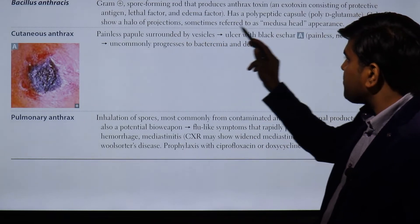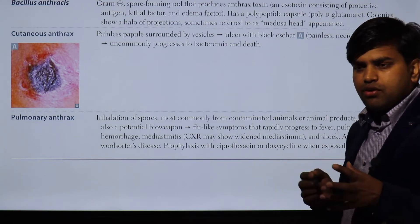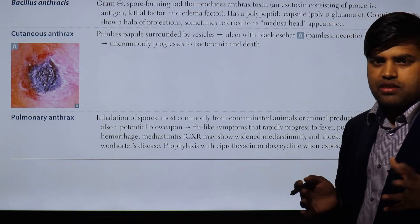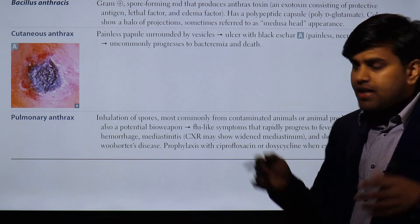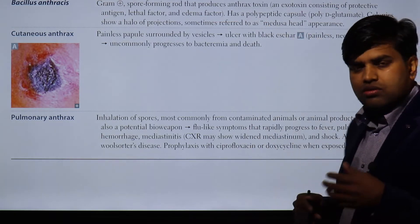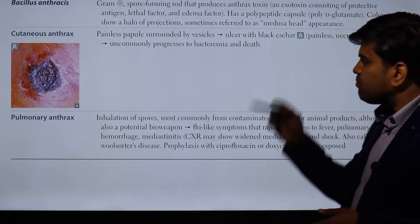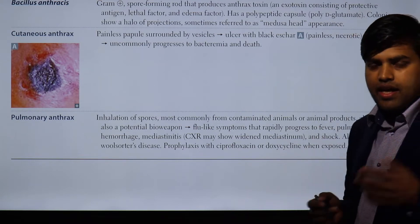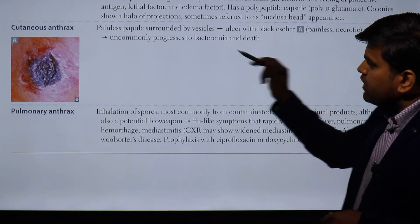The colonies of Bacillus anthracis have a halo of projections sometimes referred to as a 'medusa head' appearance. In exam scenarios, they may not directly state Bacillus anthracis — instead they may describe an organism growing on blood agar with a medusa head appearance and a polypeptide capsule, and you must identify the answer as poly-D-glutamate polypeptide.